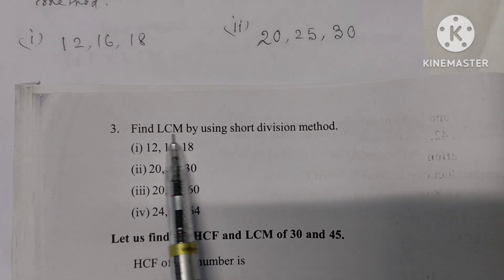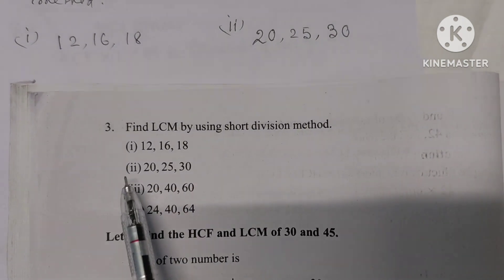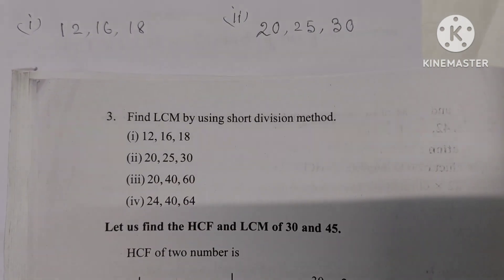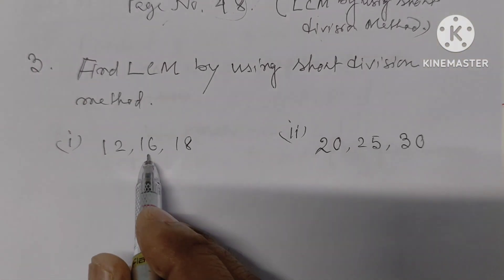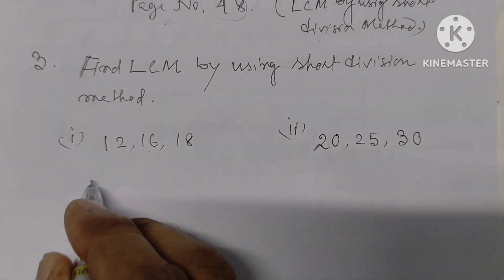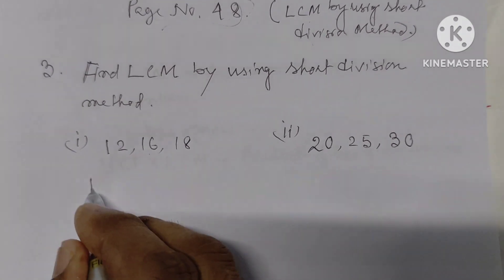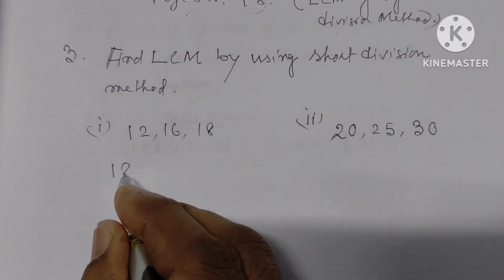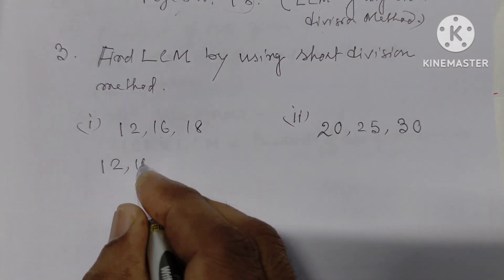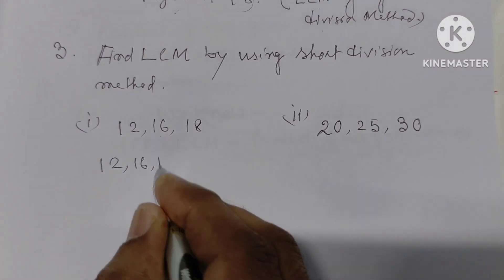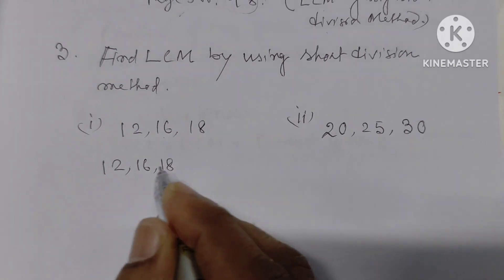We will find the LCM by using the short division method. The numbers are 16 and 18. We start dividing using the short version: 2, 16, 18.